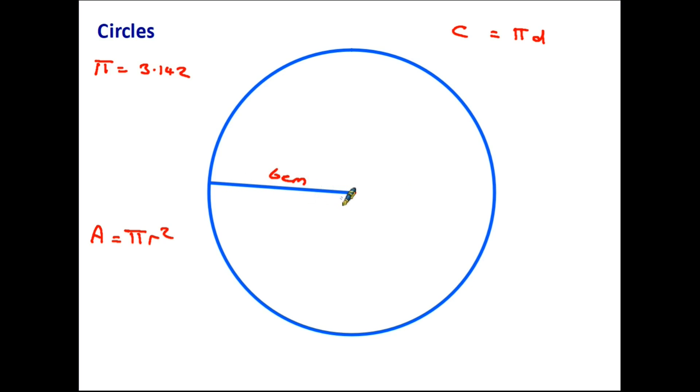Here's a circle with the measured radius of 6 centimeters. So A equals pi times the radius squared, so that will be pi times 6 squared. We know that 6 squared is 36, so we are going to multiply 36 times 3.142 and we would get the answer 113.112 centimeters squared.